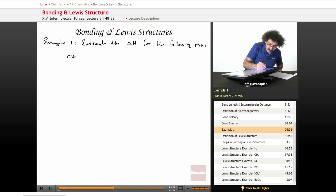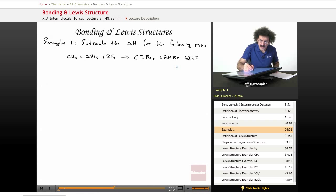We have CH4, which is methane, plus two Br2s, plus two F2s, goes to CF2Br2, plus HBr, plus HF. And if I'm not mistaken, this should be a 2, and this should be a 2. So we have this equation here, and we want to calculate the delta H for this.